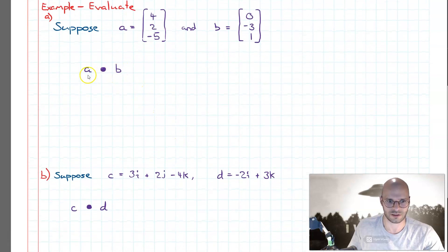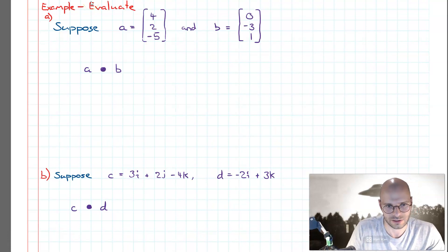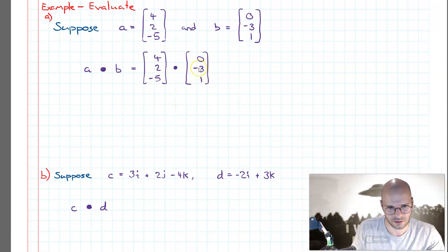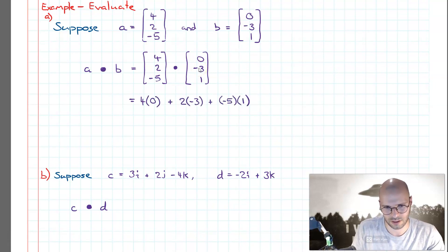Let's have a look at an example. First we'll do the manual calculation of a dot b, and then I'll show you how to use your technology to automate this. Consider we have vectors a and b. To compute the dot product, we multiply all the corresponding elements together and then sum them all together. Thus a dot b yields a scalar value of negative 11.